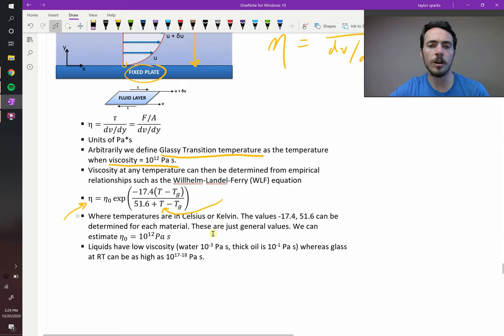Just some rule of thumb numbers for viscosity. Water is something like 10 to the negative 3 Pascal seconds, so not very viscous at all, whereas thick oil might be like 10 to the minus 1, whereas glass at room temperature could be as high as 10 to the 17th or 18th Pascal seconds. So viscosity expands over huge ranges. Many orders of magnitude, you can have viscosity ranging.